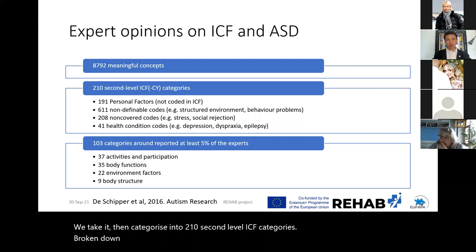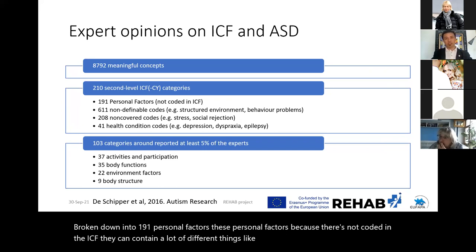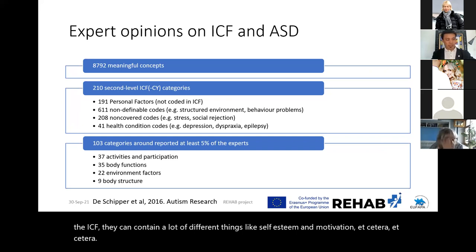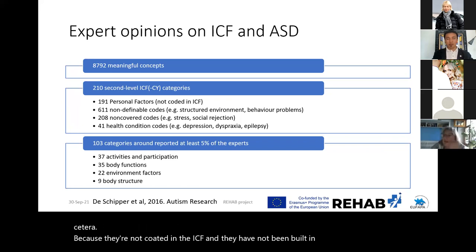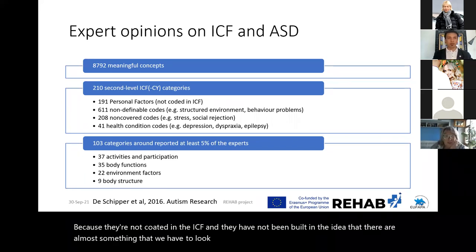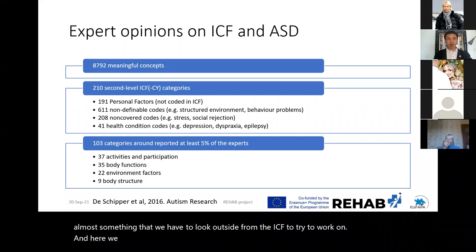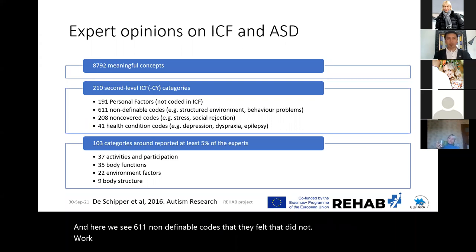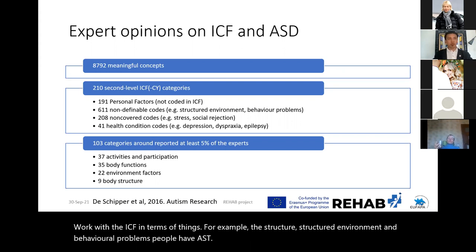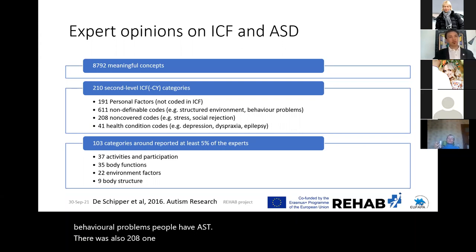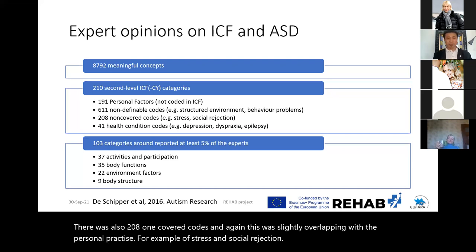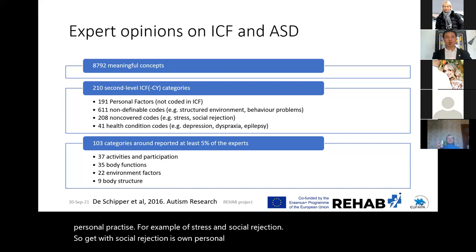They looked at the whole ICF and all of the codes to identify which were meaningful and relevant for people with ASD. They summarised 8,792 meaningful concepts, categorised into 210 second-level ICF categories — broken down into 191 personal factors. Because personal factors are not coded in the ICF, they can contain things like self-esteem and motivation, but have to be looked at outside the ICF. There were also 611 non-definable codes — things like structured environment and behavioural problems — 208 non-covered codes overlapping with personal factors such as stress and social rejection, and 41 health condition codes covering comorbidities like depression, dyspraxia, and epilepsy.